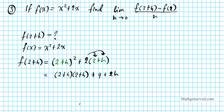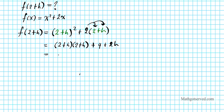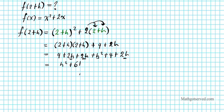Now let's expand fully. We're going to have 4 plus 2h plus 2h plus h squared, plus 4 plus 2h. Now let's combine like terms. We have h squared, and then we can combine 2h, 2h, and 2h, which gives us plus 6h. And when you combine the constants, 4 and 4, you get plus 8.